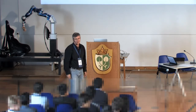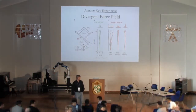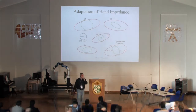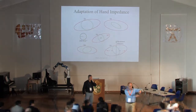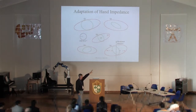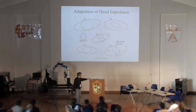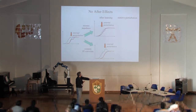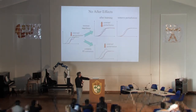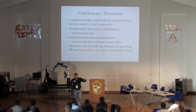They also measured the stiffness directly. The evidence is the absence of after-effects and the reduced trial-to-trial variability, which is consistent with higher stiffness. They could show that stiffness increases — and it increases selectively along the dimension that matters for rejecting the divergent force field.